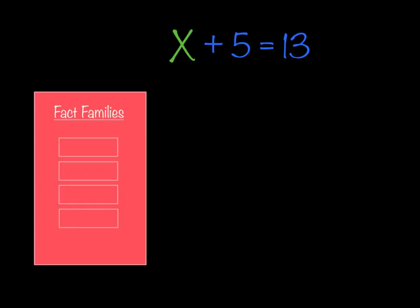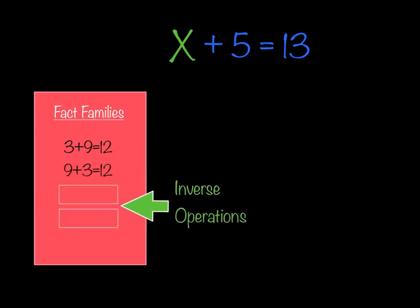For this fact family, we're going to be doing addition and subtraction first. We're going to look at a sample fact family. If you see 3 plus 9 equals 12, and if I flip-flop the 9 and the 3, that gives me another partner: 9 plus 3 equals 12. But I'm also going to use the inverse operation of addition, which is subtraction. The larger number — the answer in the addition portion — has to begin my subtraction problem. So another member would be 12 minus 3 equals 9, and the final member would be 12 minus 9 equals 3.